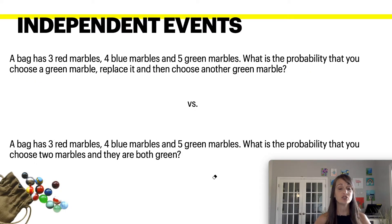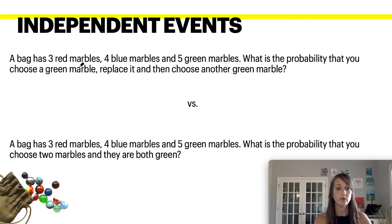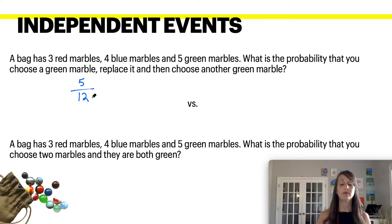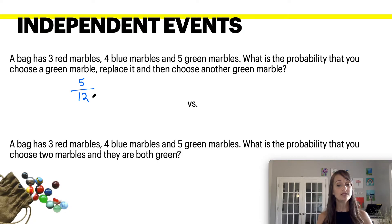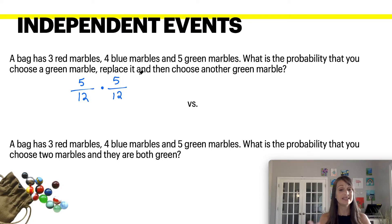For example, a bag has three red marbles, four blue, and five green. What's the probability that you choose a green marble? You have five green marbles and a total of 12 marbles, so the probability of choosing a green marble is 5 over 12. Then they say you replace it — meaning you put the marble back — so you still have 12 marbles, and the probability of choosing another green marble is still 5 over 12. Multiplying them together gives 25 over 144.